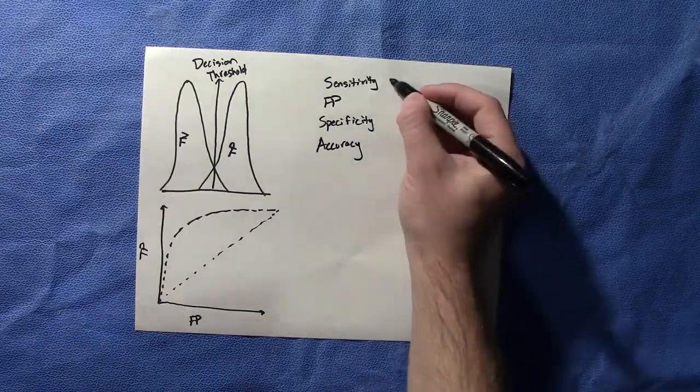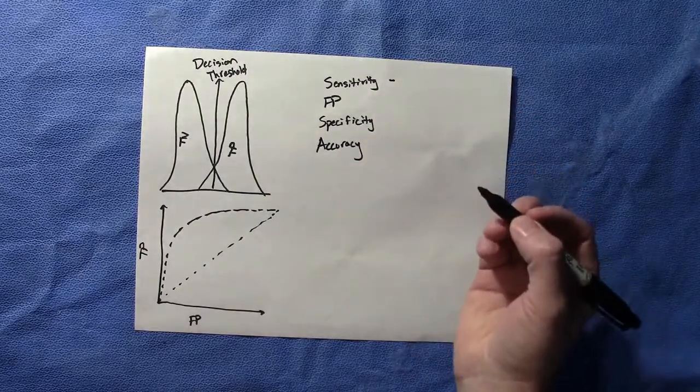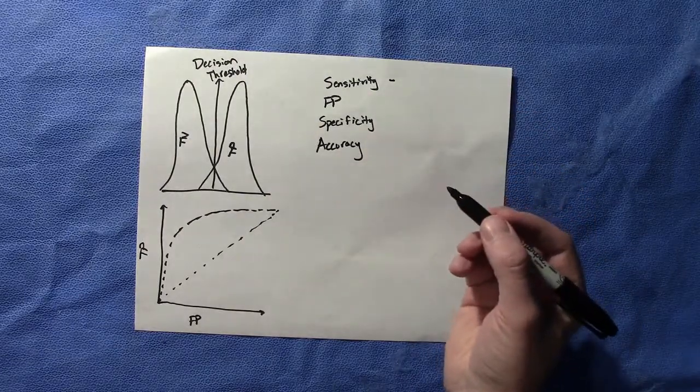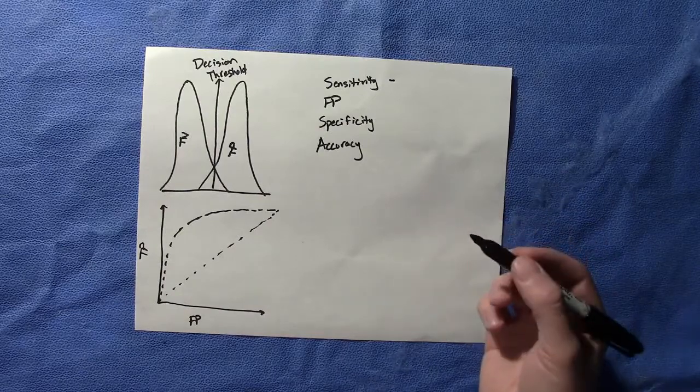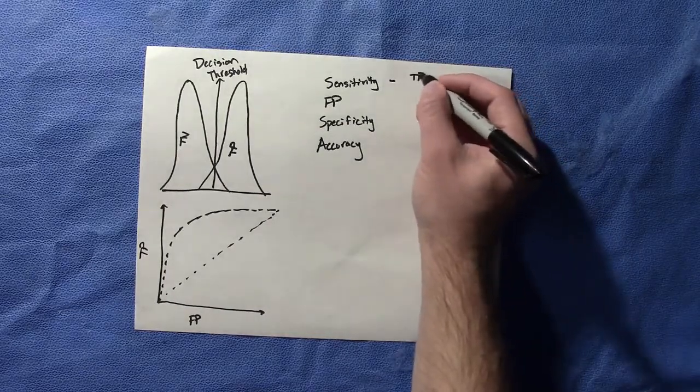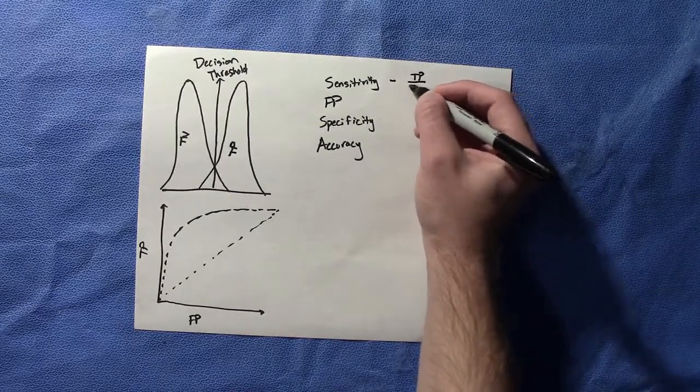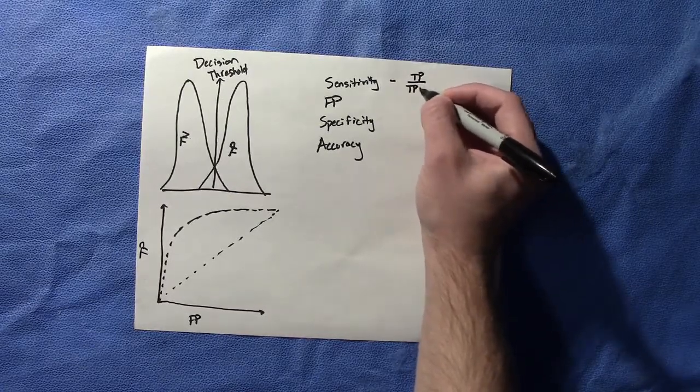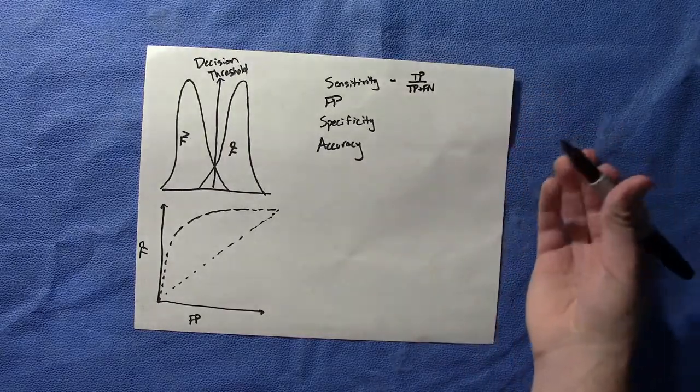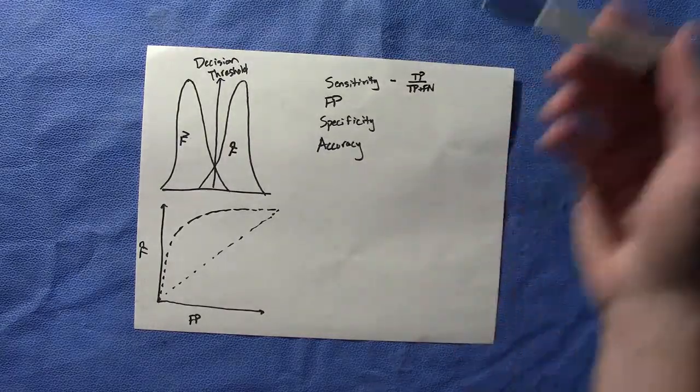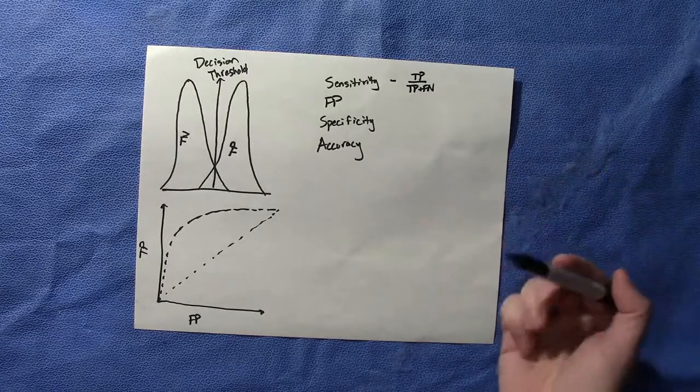So the sensitivity is the true positive fraction. That means that we are calling something positive when in fact it is positive. And that is equal to the number of true positives over true positives plus false negatives. So they may give you in a written test an example of detecting cancer.